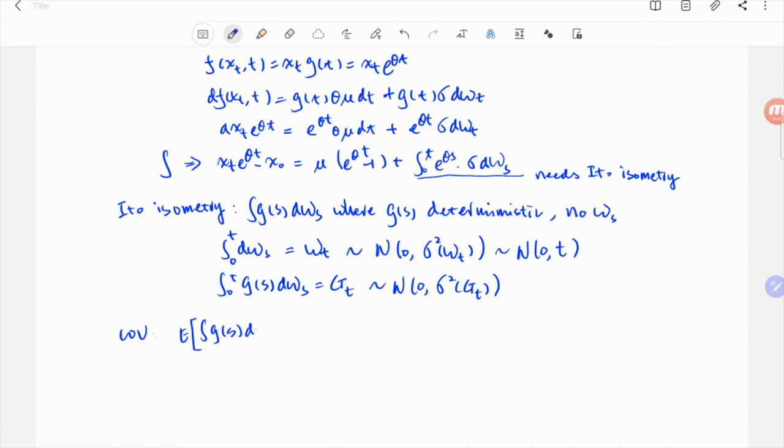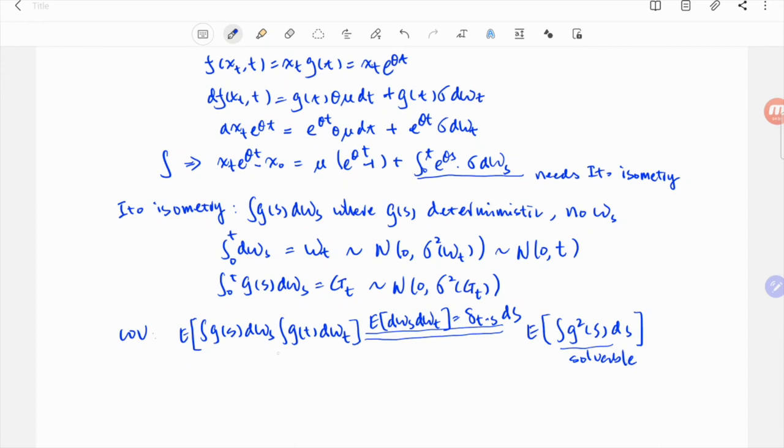To calculate its variance, we know the expected value of dw_t, dw_s, had delta dt minus s ds. What it means is only when t equals s, it's ds. Otherwise, it's 0. So we can write the variance as the expected value of g_s squared ds, which usually is very easy to solve.